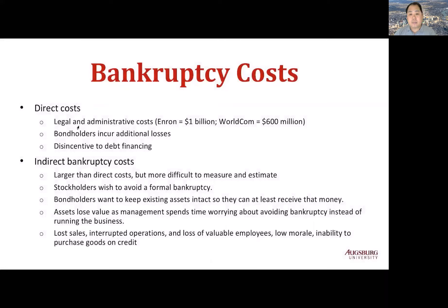We know that excessive debt is risky. Now we must include another factor related to risk: Case 3 with taxes and bankruptcy. If a firm cannot make its promised payments when it borrows money, bankruptcy must be filed either by the firm itself or by creditors. Bankruptcy is a costly process — not free. There are direct costs and indirect costs. Direct costs include legal and administrative costs; for example, in the Enron case, this was $1 billion.